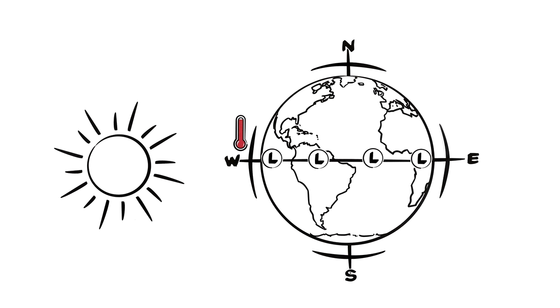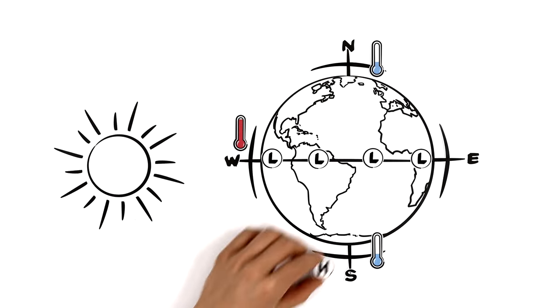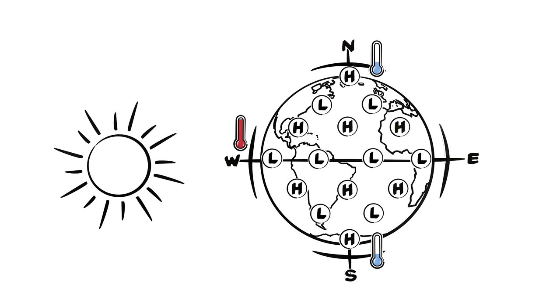In contrast, the poles are very cold, with many high pressure zones. There are more highs and lows in between.